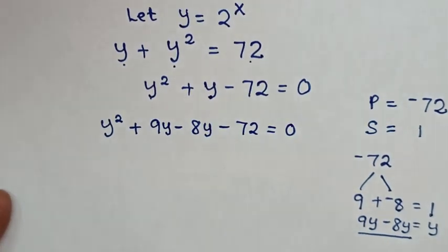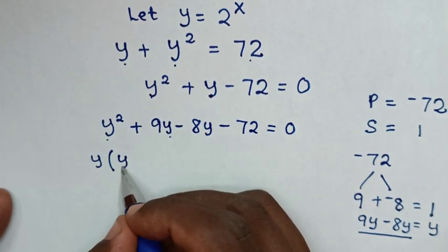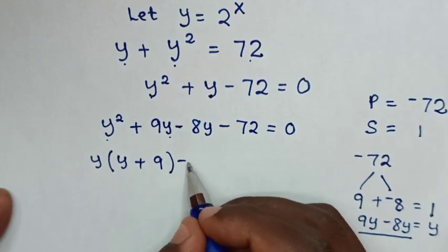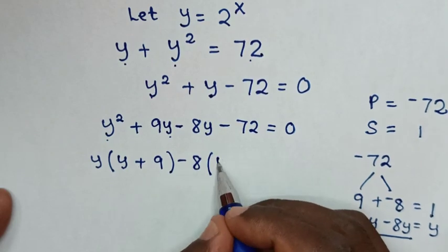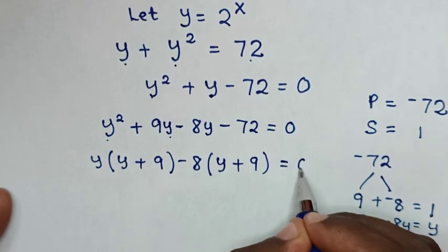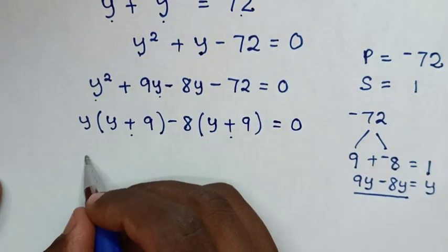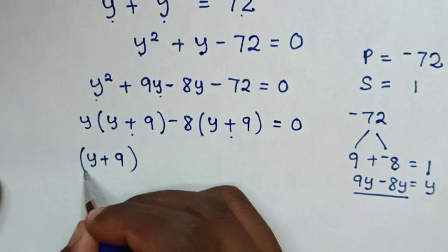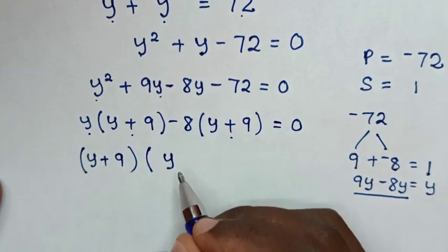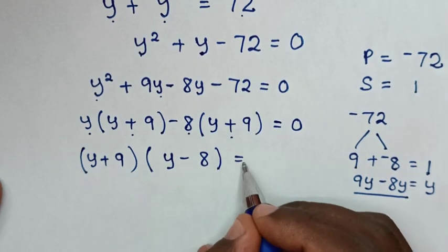Then in the next step, y is common, so we take y out of the bracket: y divided by y is y, plus 9. And negative 8 is common in the remaining terms, so bracket: y plus 9, bracket equals 0. Then y plus 9 is common, so we take y plus 9 out of bracket, giving us (y plus 9)(y minus 8) is equal to 0.